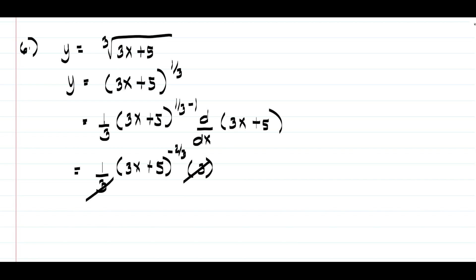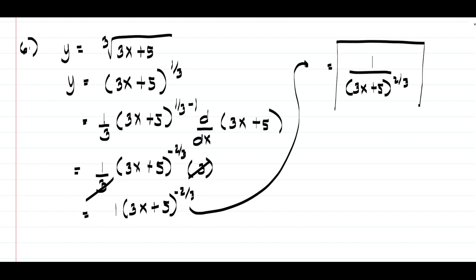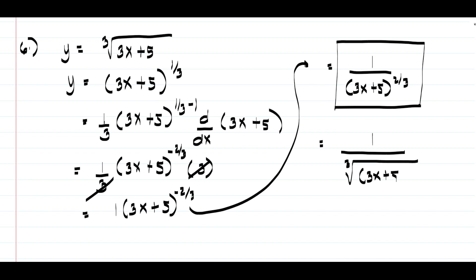We can cancel the 3s, giving us 1 times 3x plus 5 raised to negative 2 thirds. To eliminate the negative exponent, move it to the denominator: 1 over quantity 3x plus 5 raised to positive 2 thirds. In radical form, this is 1 over the cube root of 3x plus 5 raised to 2. This will be our answer.